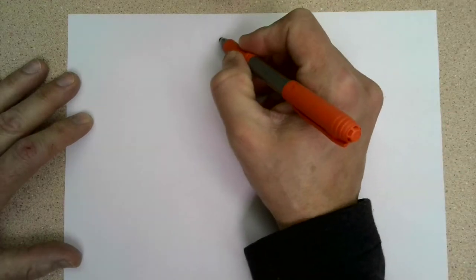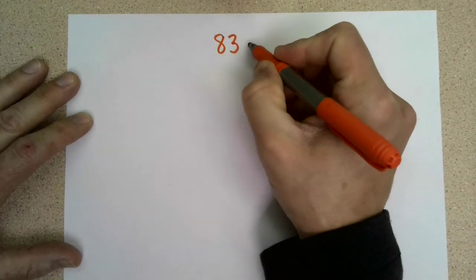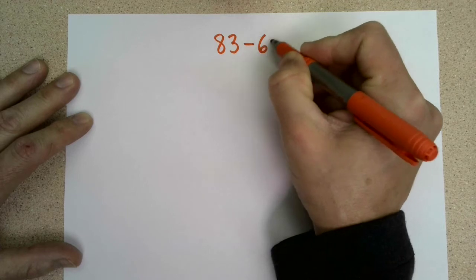So let's check to see if the split strategy will work in subtraction. What if we have 83 minus 67?